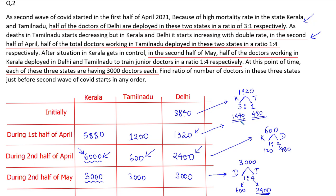After adding those 480 doctors, the number of doctors in Tamil Nadu becomes 1200. So before the first half of April, Tamil Nadu had 1200 minus 480 = 720 doctors. Those 1440 doctors are added to Kerala, and after adding them the number in Kerala becomes 5880. So before that, Kerala had 5880 minus 1440 = 4440 doctors.